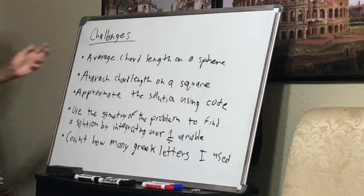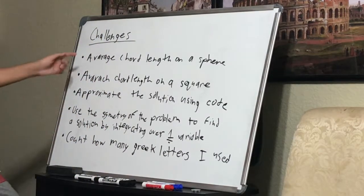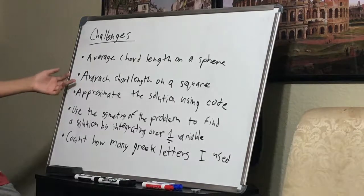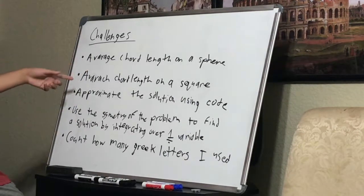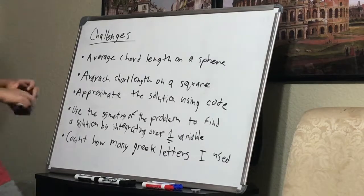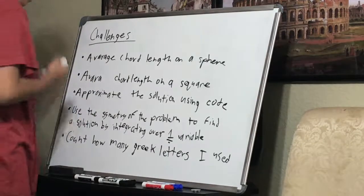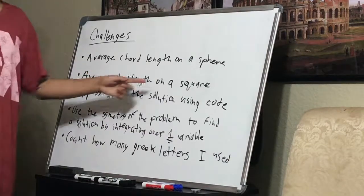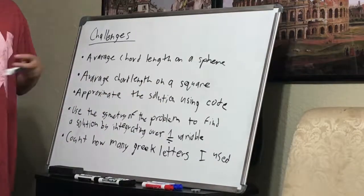Here are some extra challenges. First: find the average chord length on a sphere instead of a circle — this time you may use three independent variables instead of two. Second challenge: find the average chord length on a square, so instead of a circle, try and find the chord length on a square.